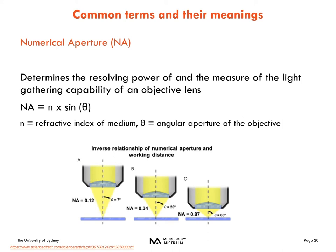NA stands for numerical aperture — a number that allows you to determine the resolving power of an objective and how well that lens can collect light from your sample. It takes into account the refractive index of the media and the angle by which the cone of light accesses the object, also known as theta. The lower the NA, the further away the objective can be from the sample. Higher numerical aperture objectives have a larger theta angle, allowing them to capture more light and resulting in better signal to your image detectors. This number is written on the outer barrel of your objective, usually underneath the magnification number.